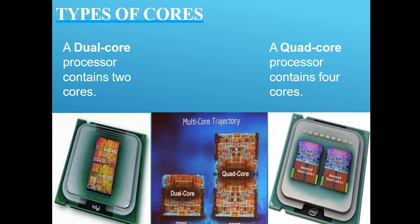There are two types of cores: a dual core and a quad core. In the dual core we have two cores, and in the quad core we have four cores.